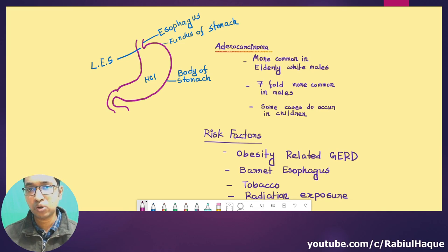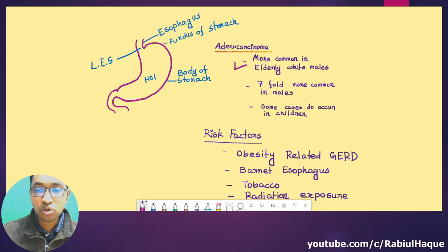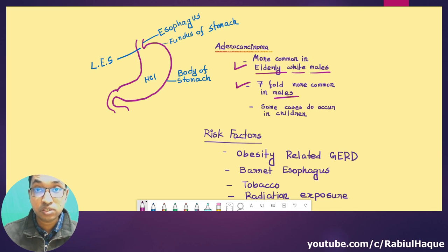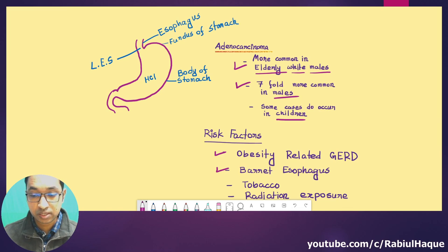Now let's discuss adenocarcinoma of the esophagus. It is more common in elderly white males, seven-fold more common in males, though some cases do occur in children as well. Risk factors include obesity-related gastroesophageal reflux disease, Barrett's esophagus, tobacco, and radiation exposure.